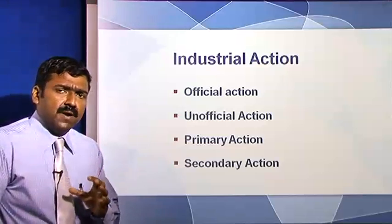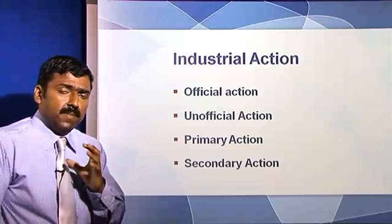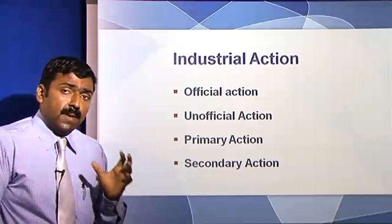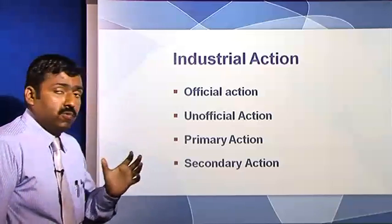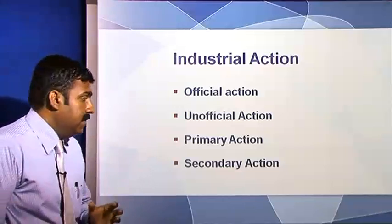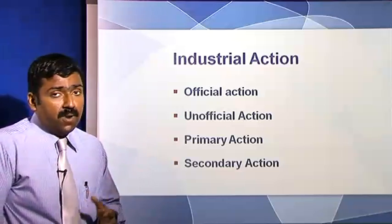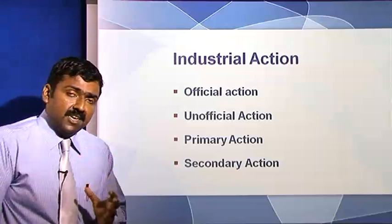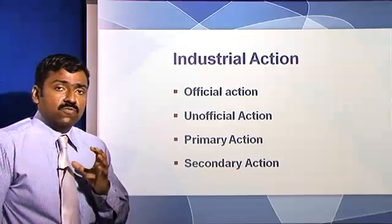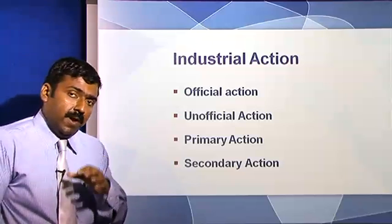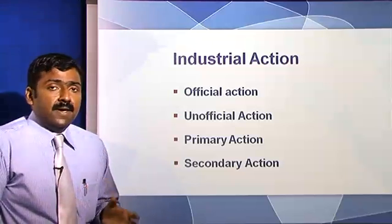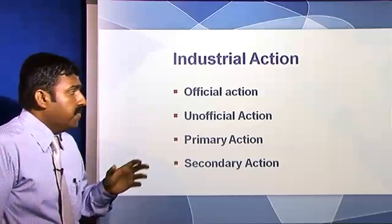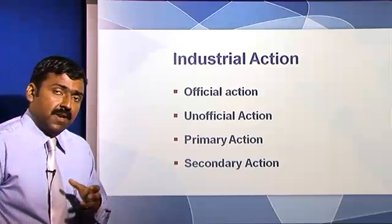Primary action is against the party directly involved — for example, employees strike work against a particular management, the employer who is directly involved in the issue. Secondary action is when a supplier or any third party is involved and the action is taken so as to bring about a solution to the problem, wherein the party behind the cause of the problem is external to the management and the workforce. These are the four different types of industrial actions which can happen.